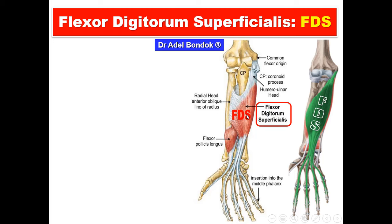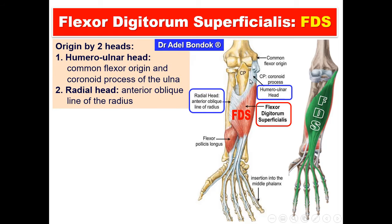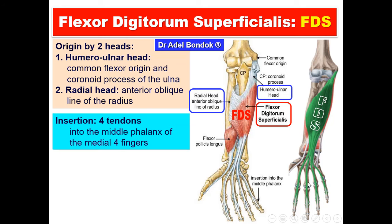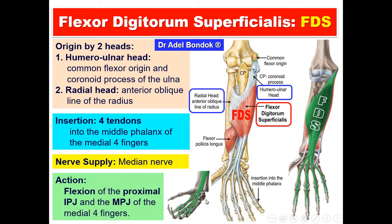Flexor digitorum superficialis arises by two heads. The humeroulnar head from the common flexor origin and from the coronoid process of the ulna, and the radial head from the anterior oblique line of the radius. Insertion: by four tendons into the middle phalanx of the medial four fingers. Nerve supply: the median nerve. Action: flexion of the metacarpophalangeal joint and the proximal interphalangeal joint. It also assists in flexion of the wrist joint, but it is not the main flexor.